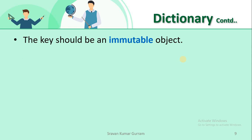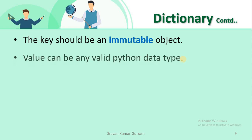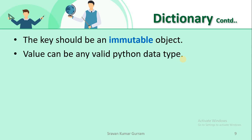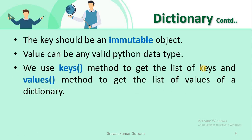The key should be an immutable object — we discussed which ones are mutable and which are immutable. The value can be any valid Python data type. We use the predefined method keys() to get the list of keys of a dictionary, and the predefined method values() to get the values of the dictionary.